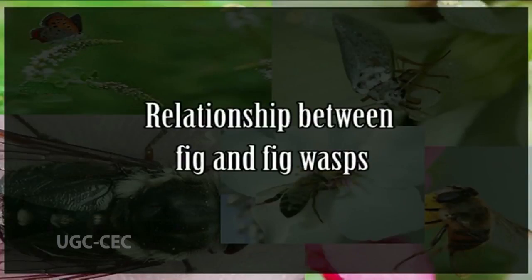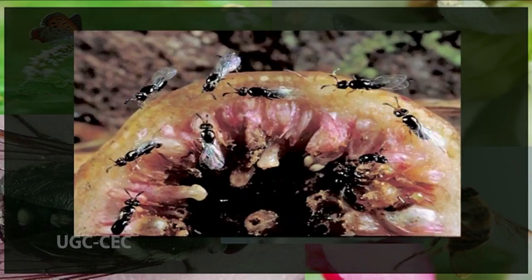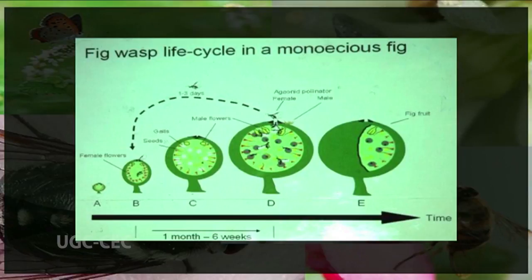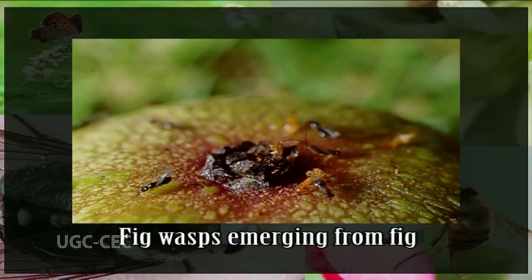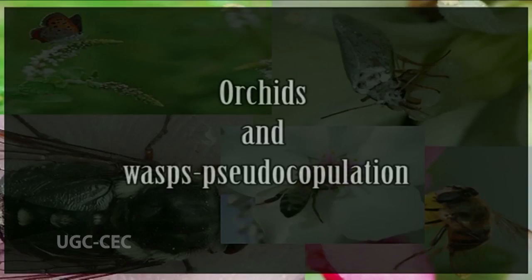Now we discuss the relationship between fig and fig wasps. Figs and fig wasps have evolved to help each other and are interdependent for reproduction. Fig wasps lay their eggs inside the fruit where the wasp larvae can safely develop, and in return the wasps pollinate the figs. Fig wasps are responsible for pollinating almost one thousand species of figs. These wasps and fig trees are obligate mutualists, meaning they cannot reproduce without each other. The mutualistic relationship between the fig trees and fig wasps is co-evolutionary and highly obligated — each fig species generally has its own wasp symbiont as pollinator, and the wasp is host-specific.